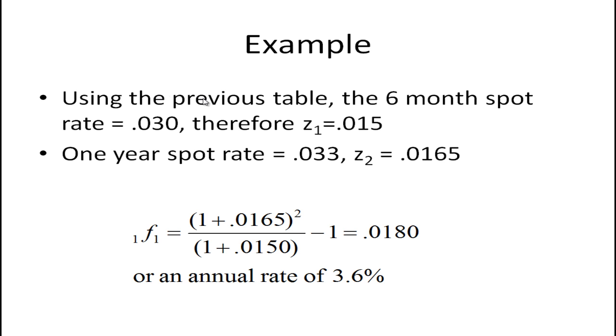So anyhow we've computed all these spot rates and let's take a look at an example. So if we look at that table the six month spot rate is .03, it's 3%. So z1 is half of that, it's a six month rate so it's going to be one and a half percent. The one year spot rate is 3.3 percent. So that means that the interest rate that we would discount each one of those cash flows for the six month period would be half of that or .0165.